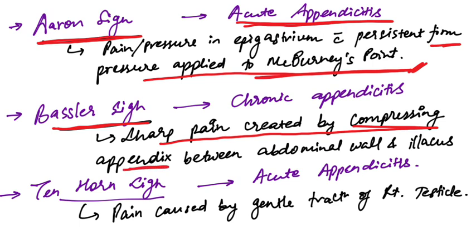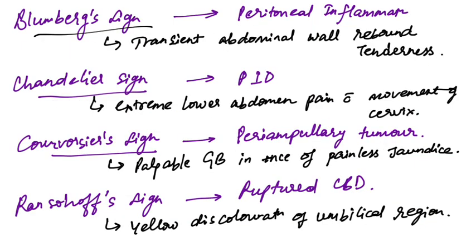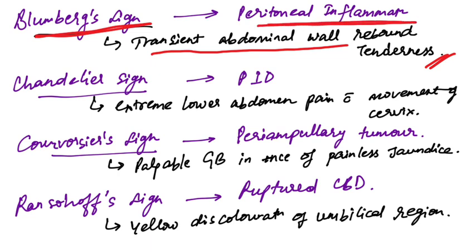Ten Horn sign is pain caused by gentle traction of the right testicle, seen in acute appendicitis. Bloomberg sign is transient abdominal wall rebound tenderness, which is a sign of peritoneal inflammation.